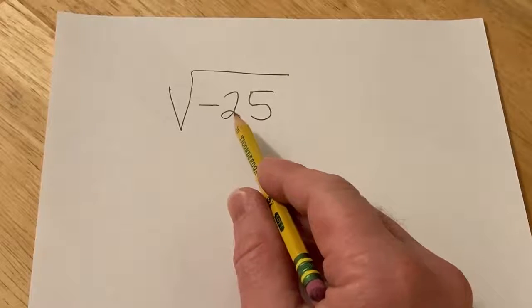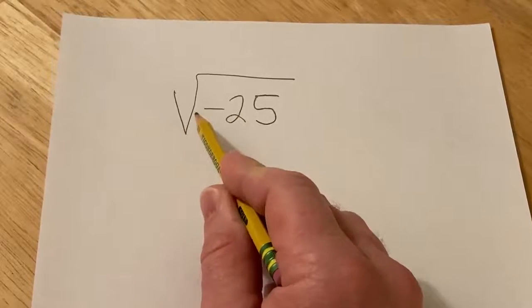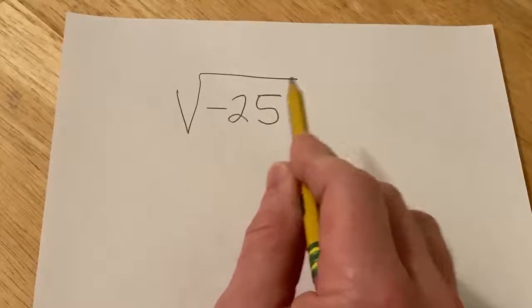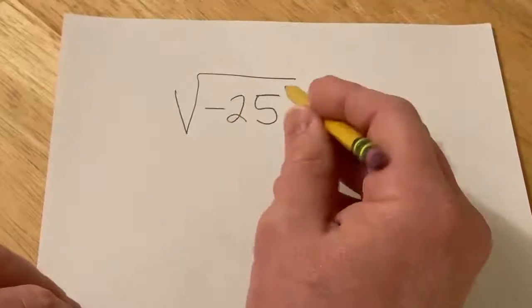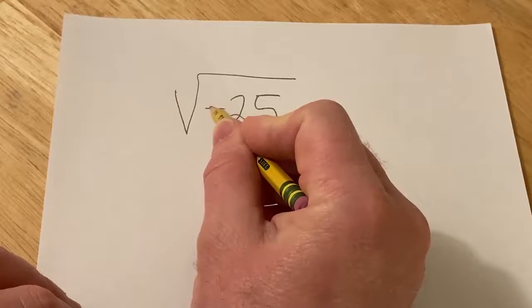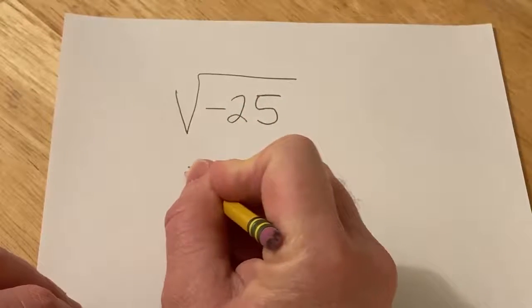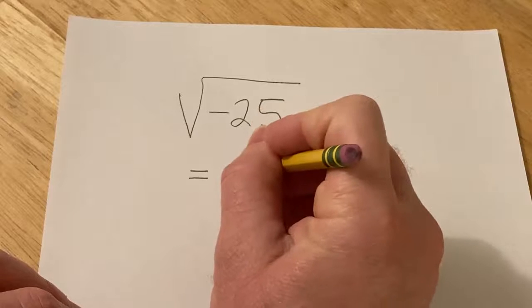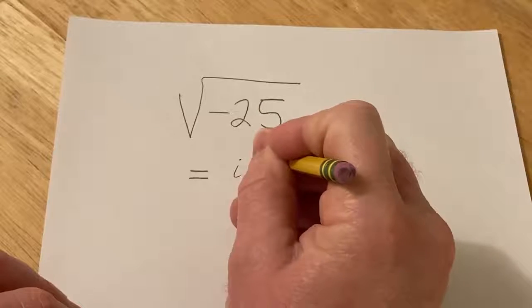Hi, in this problem we have to simplify this. So we have the square root of negative 25. And so the idea here is that whenever you have a negative inside a square root like this, what you do is you basically write it like this: i square root of 25.